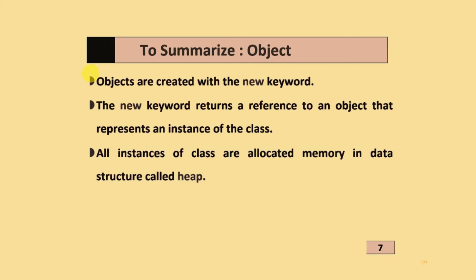To summarize object: objects are created with the new keyword. The new keyword returns a reference to an object that represents an instance of the class. All instances of the class are allocated memory in a data structure called heap.